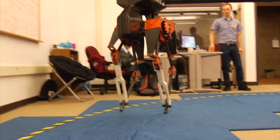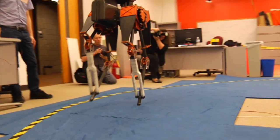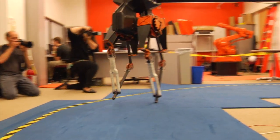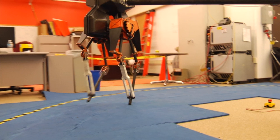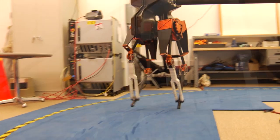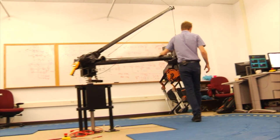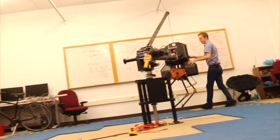The way these legs are controlled is something called series elastic actuation. Rather than just having a rigid link between your motor and the part you're trying to drive, there's actually a spring. It's a very stiff spring. It allows us to very accurately measure the forces we're applying because we can measure the deflection of that spring, and that allows us to have somewhat more accurate control than if it was just a stiff link.